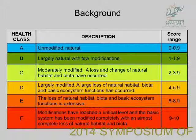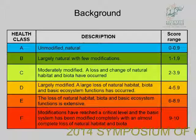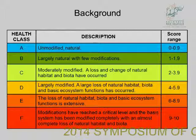This table summarizes WET-Health. The final score you get — when the wetland is at A, it means it's unmodified, natural, in pristine condition. As you go down the scale, it gets more degraded, and the worst score could be F.